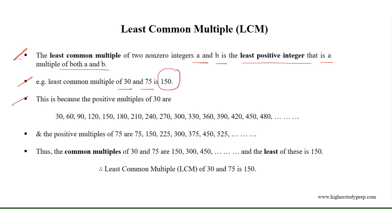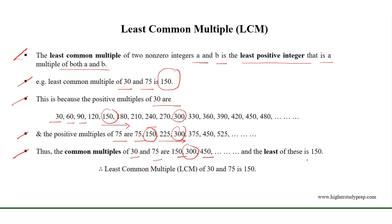This is because the positive multiples of 30 are 30, 60, 90, and so on, and the positive multiples of 75 are 75, 150, 225, and so on. Thus, the common multiples of 30 and 75 are 150, 300, 450, and so on, and the least of these common multiples is 150. Therefore, the least common multiple of 30 and 75 is 150.